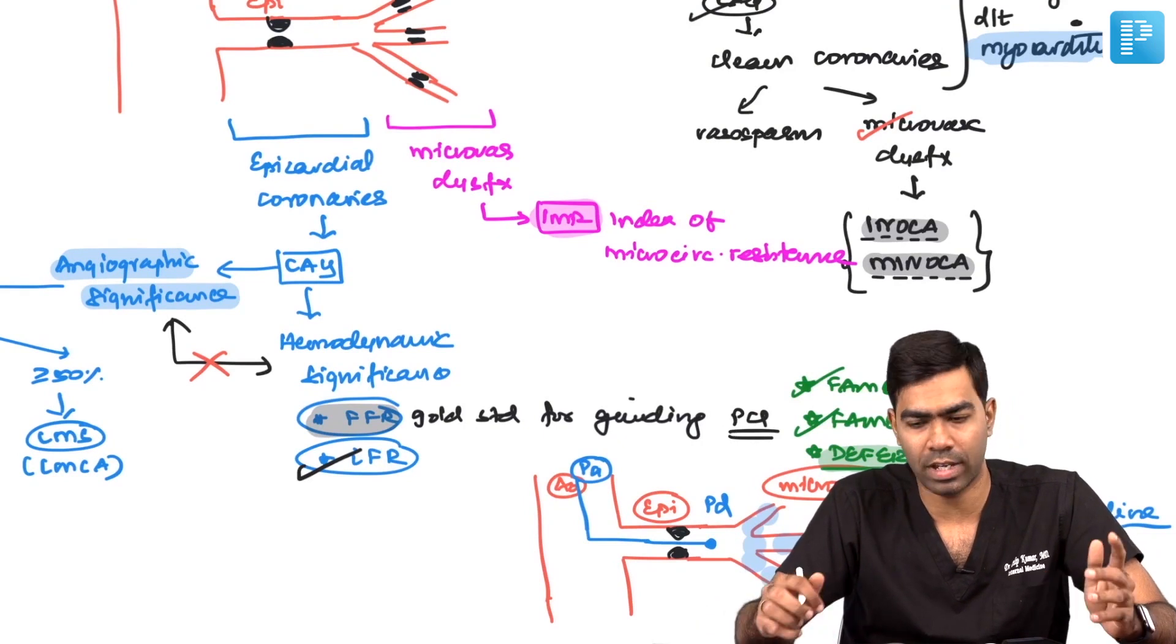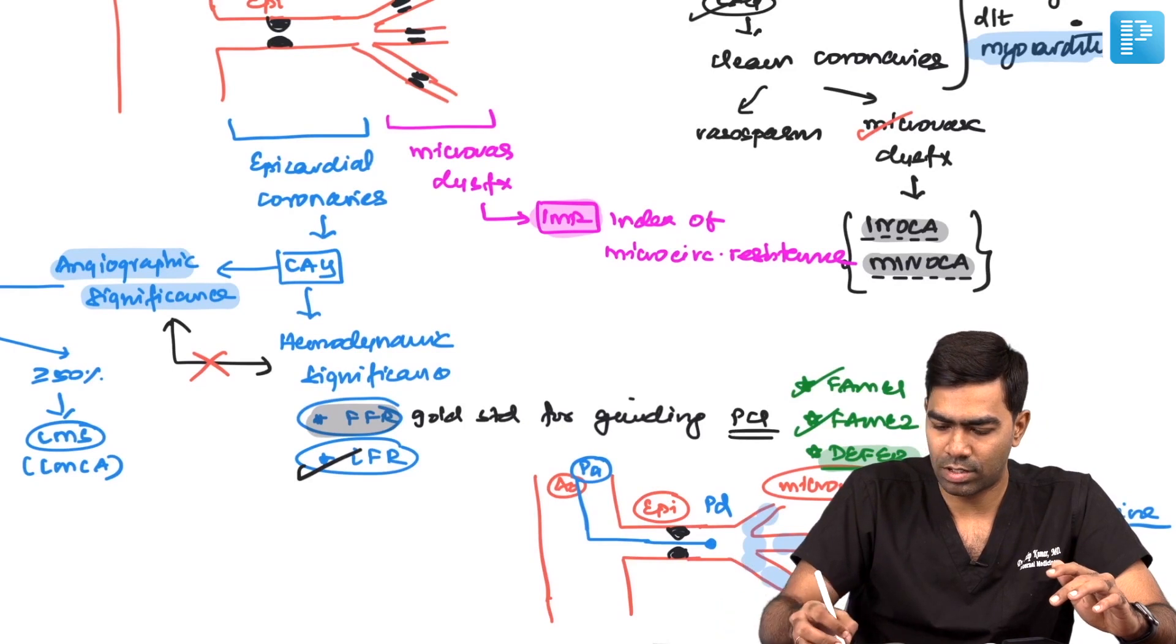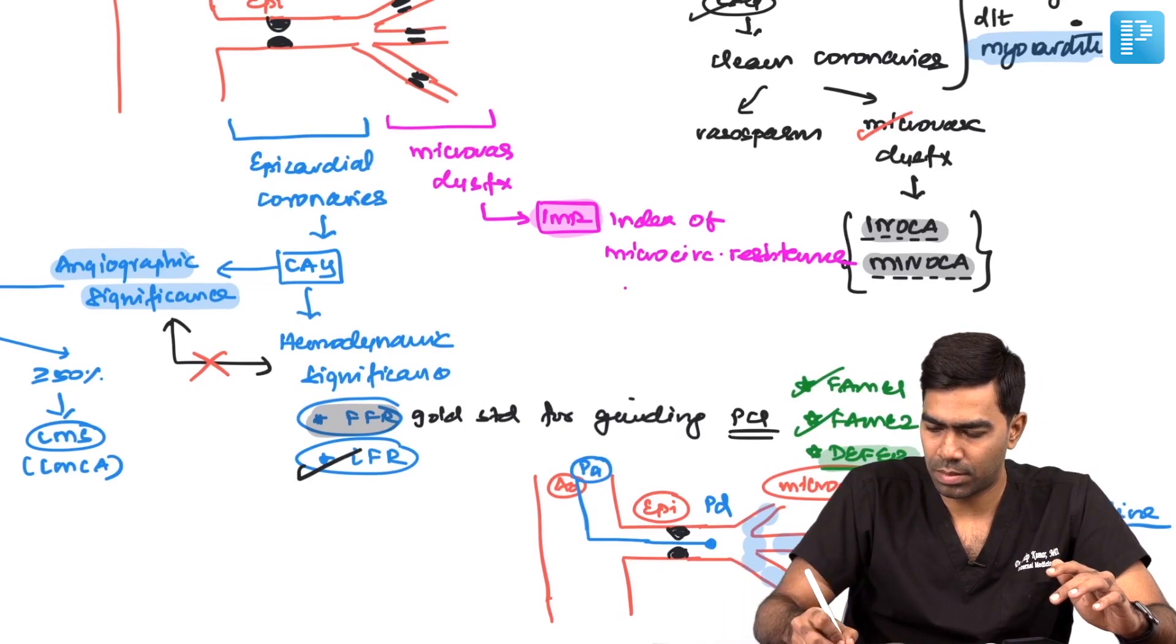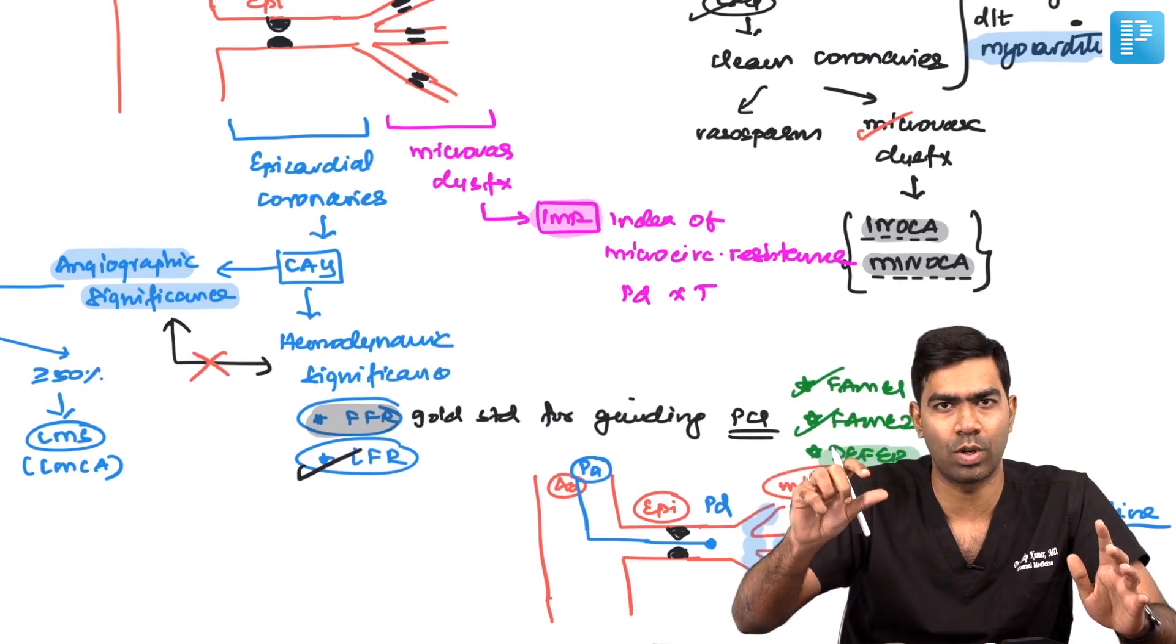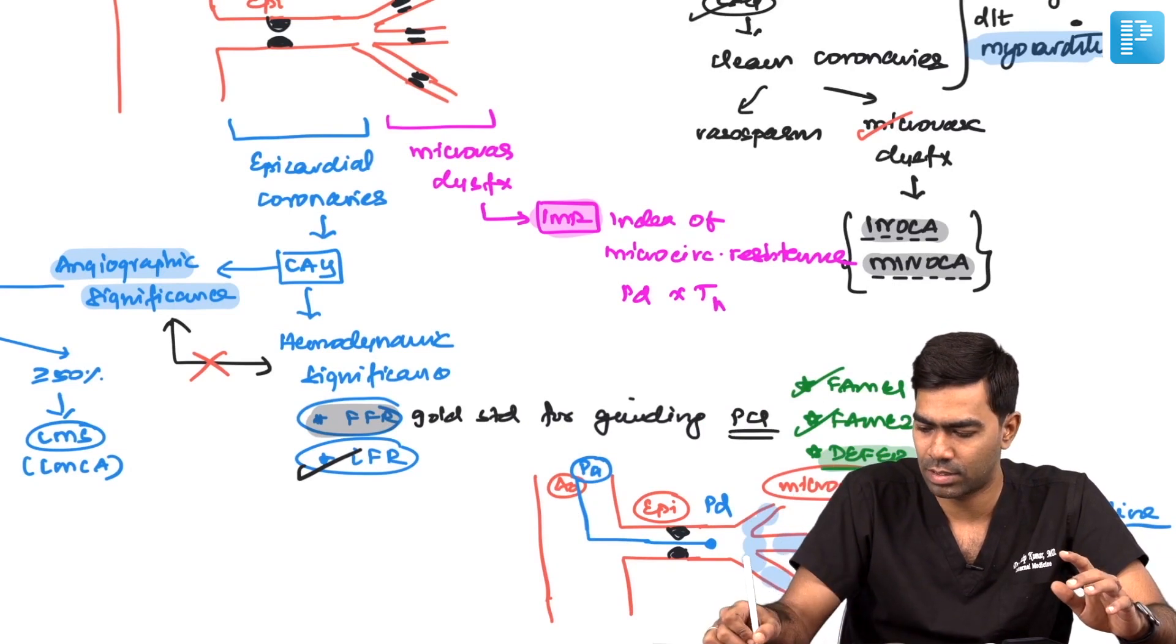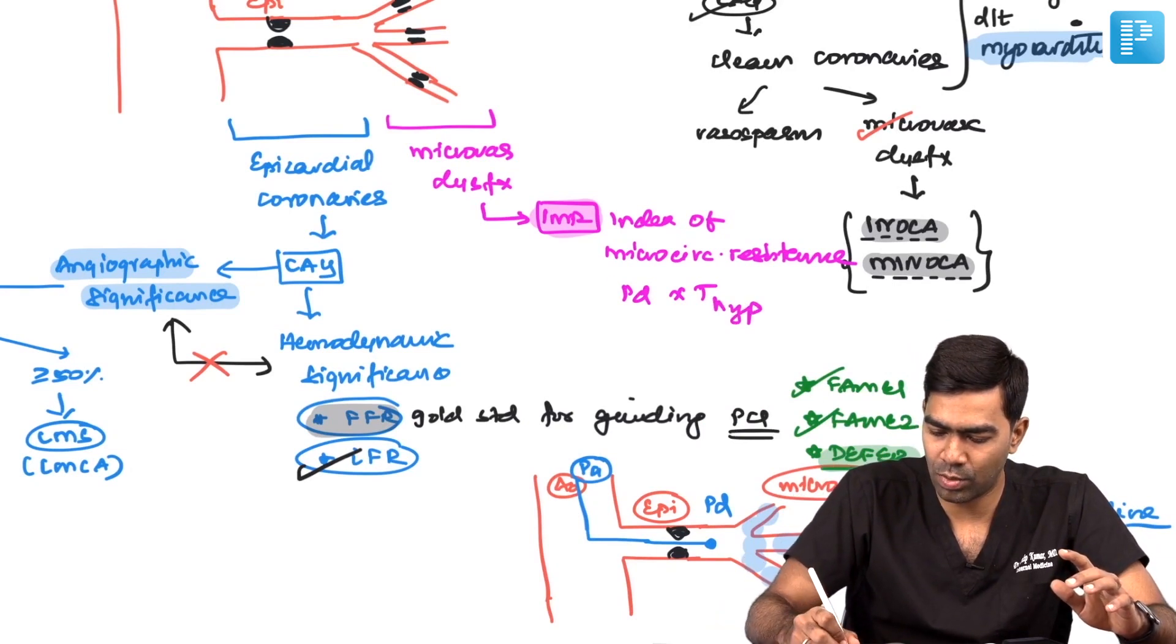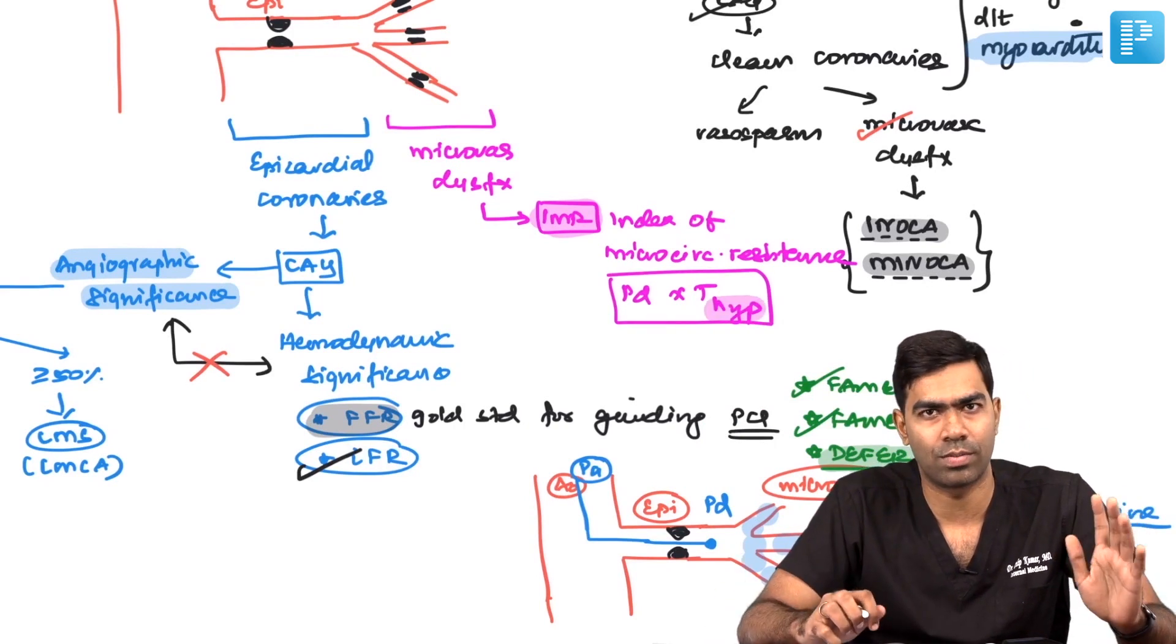How do we find out microvascular resistance? By using a formula: PD multiplied by transit time. Transit time means coronary blood flow during hyperemic states, which means to find out IMR you need to produce hyperemia—you need adenosine here also.